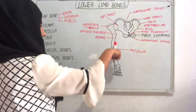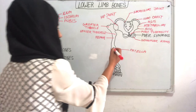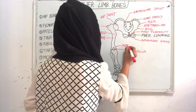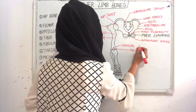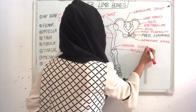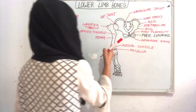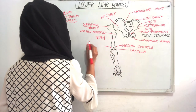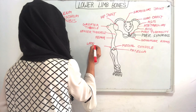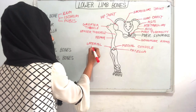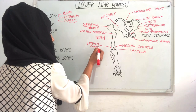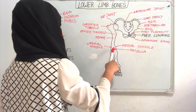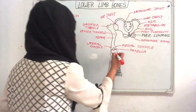The distal part of the femur makes the medial condyle on the medial side and the lateral condyle on the lateral side. Then this is our patella — this is a tiny, small bone.